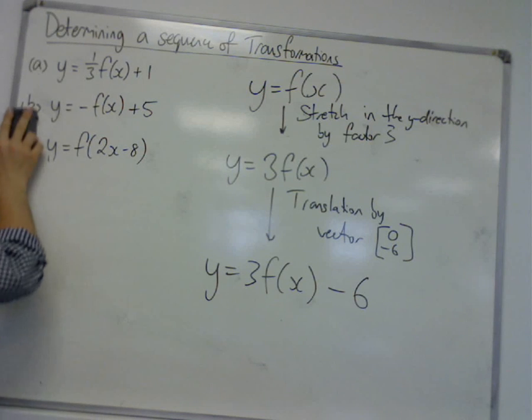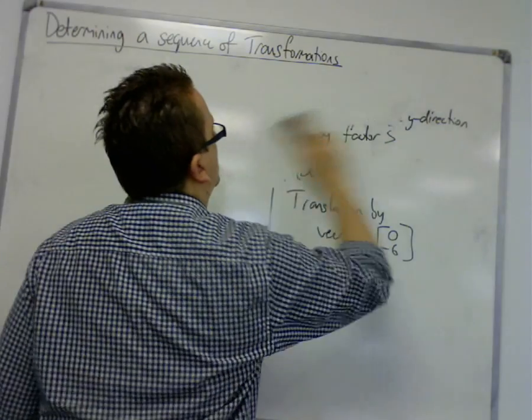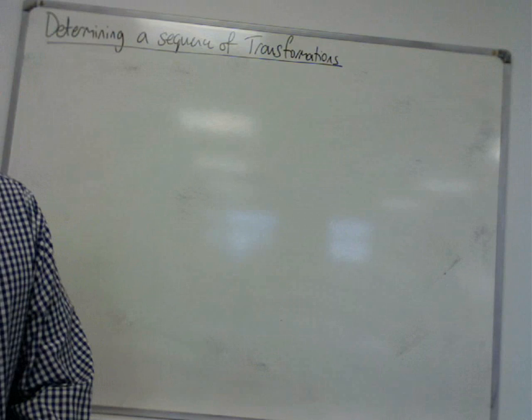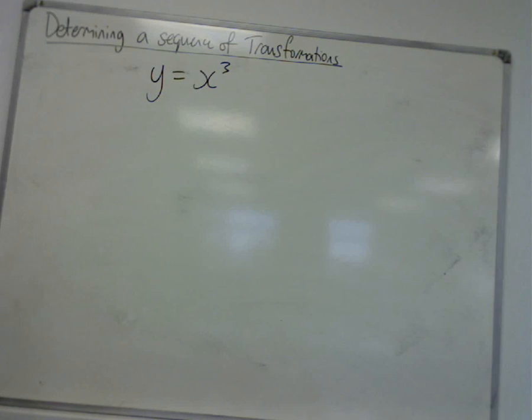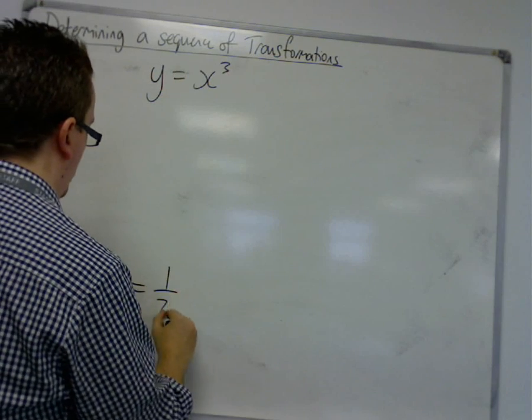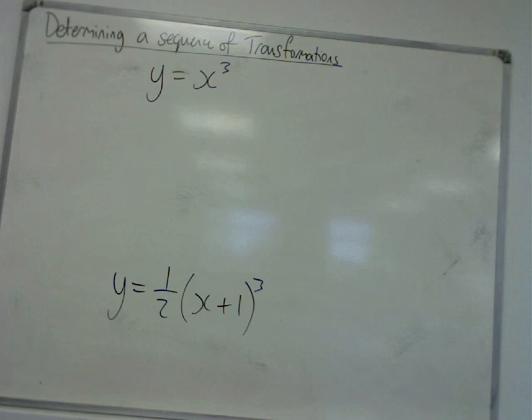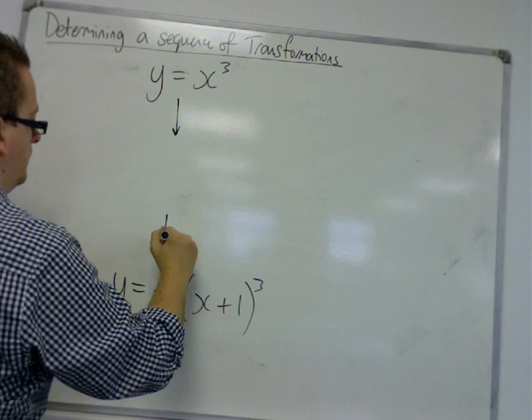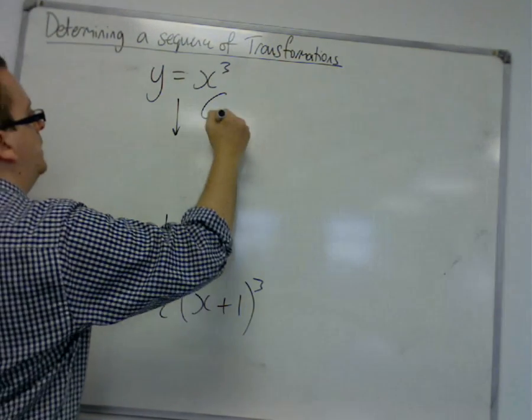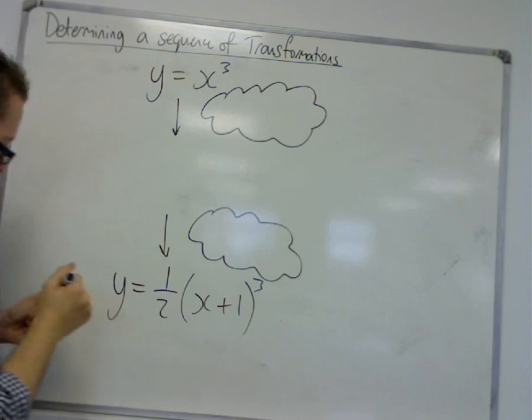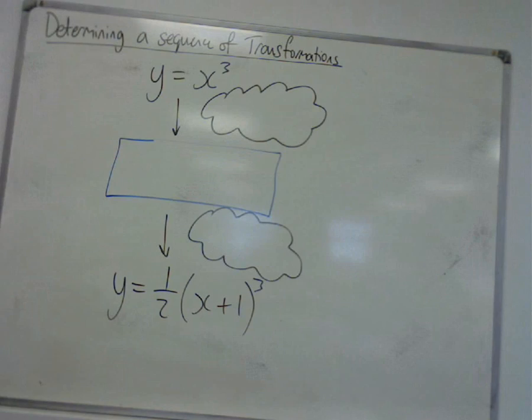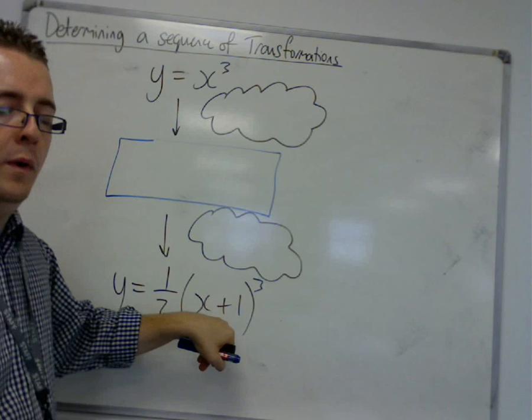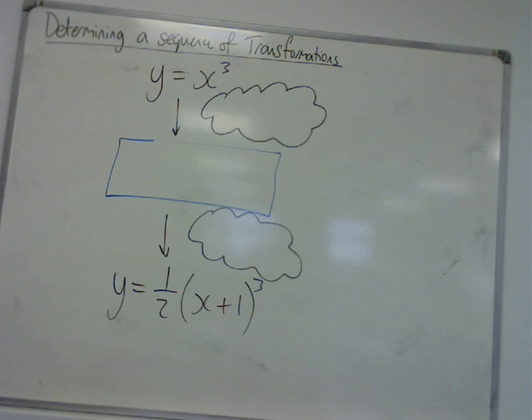Now, I did say I was going to go through one more example where we're not using f's. Just so we've seen it. So, we're going from y is equal to x cubed to y is equal to 1 half x plus 1 cubed. So, there are two transformations at work. We need to figure out what they are. So, this will be our intermediate step. Right. So, first of all, identify what the transformations could well have been. We have a translation by the vector minus 1, 0. And we have a stretch in the y direction by a factor of a half.